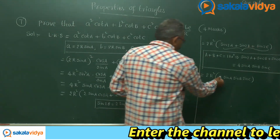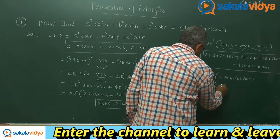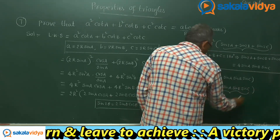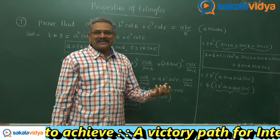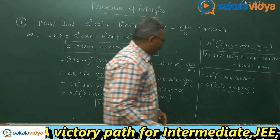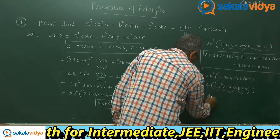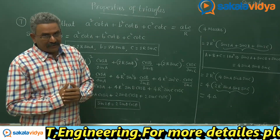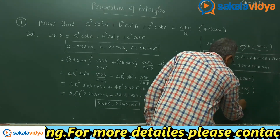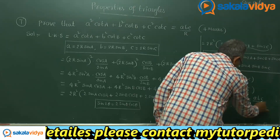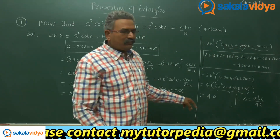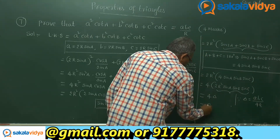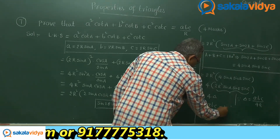We can recognize this value as related to the formula for the area Δ of the triangle. Recall that Δ = abc / 4R, so 4Δ = abc / R. Now our expression 8R² sin A sin B sin C equals 2R² × 4 sin A sin B sin C, which equals 4Δ. Since 4Δ = abc / R, the left hand side equals abc / R, which is the right hand side. Hence proved.